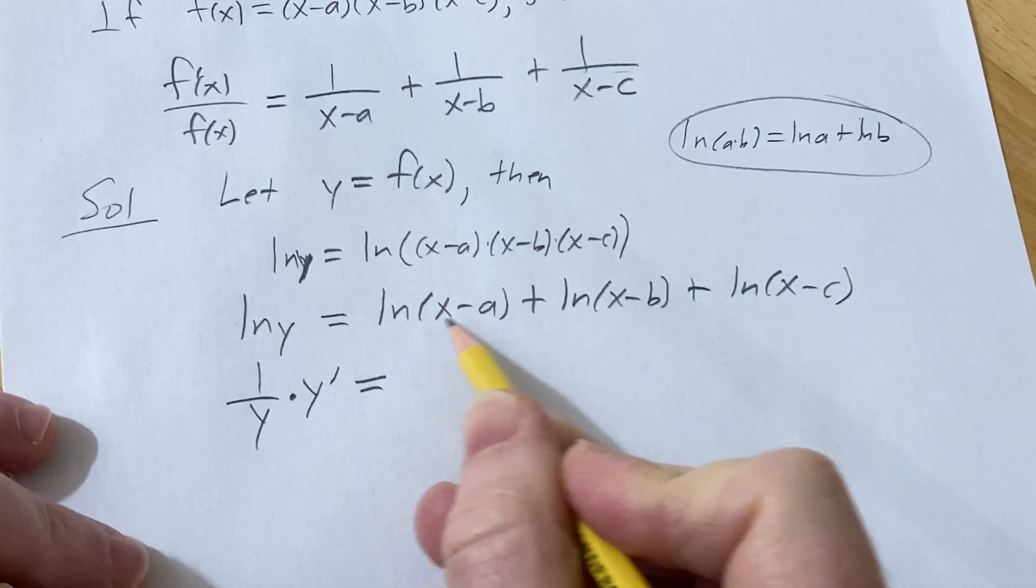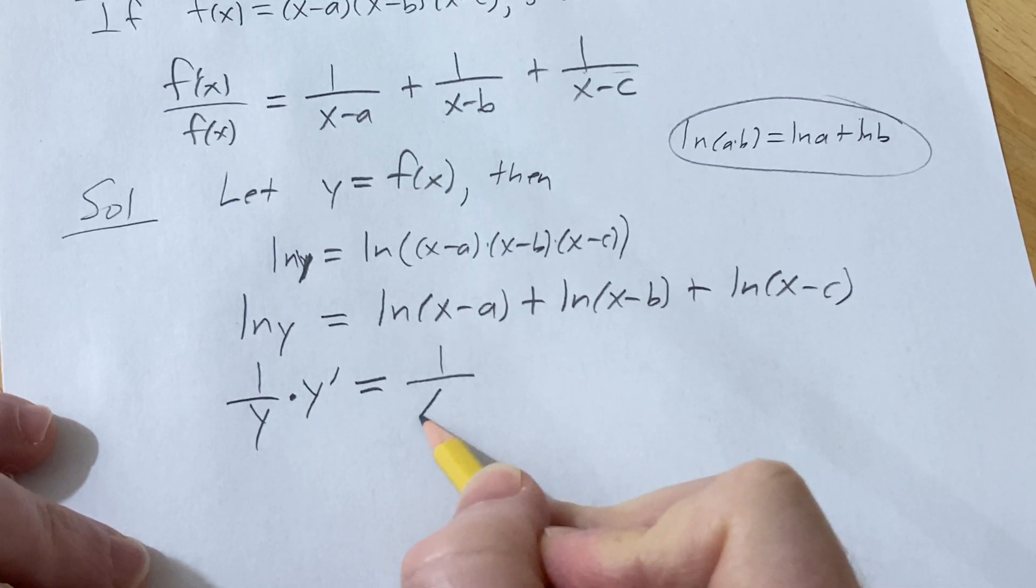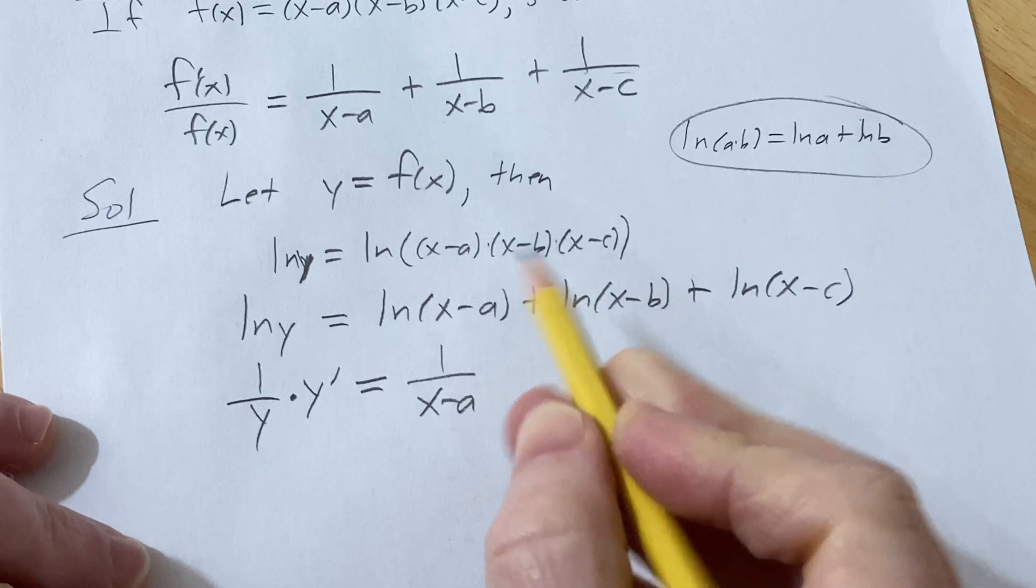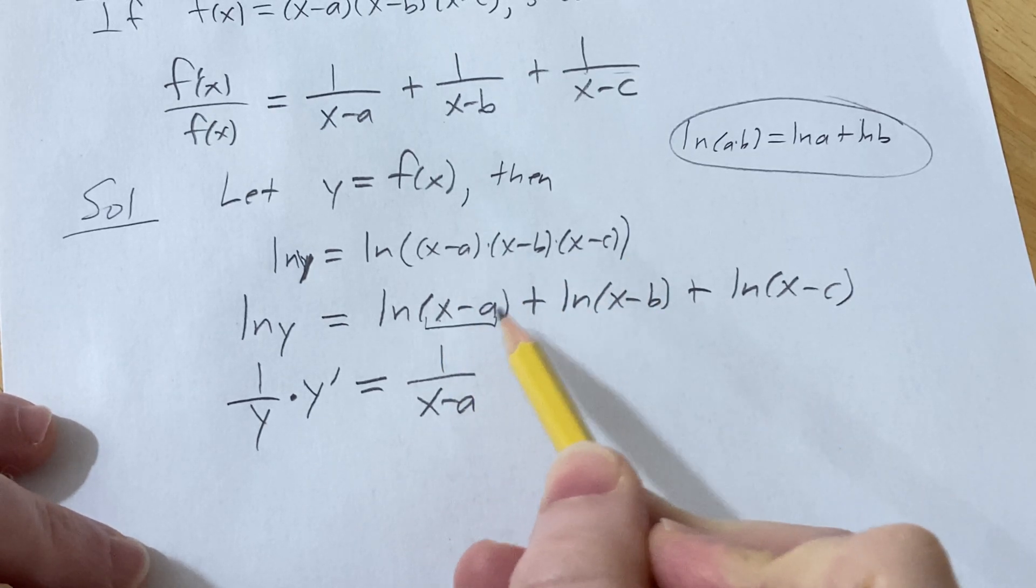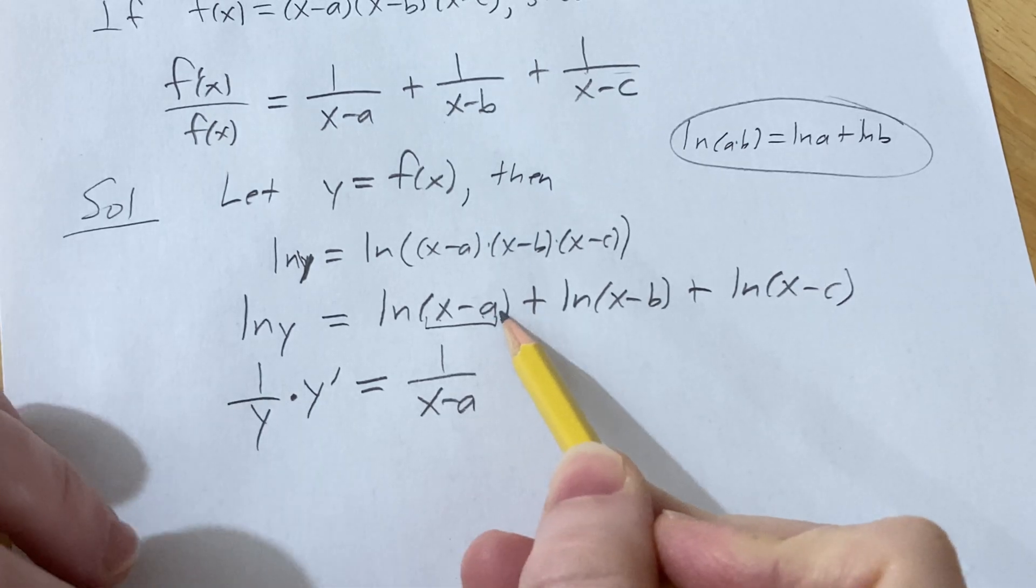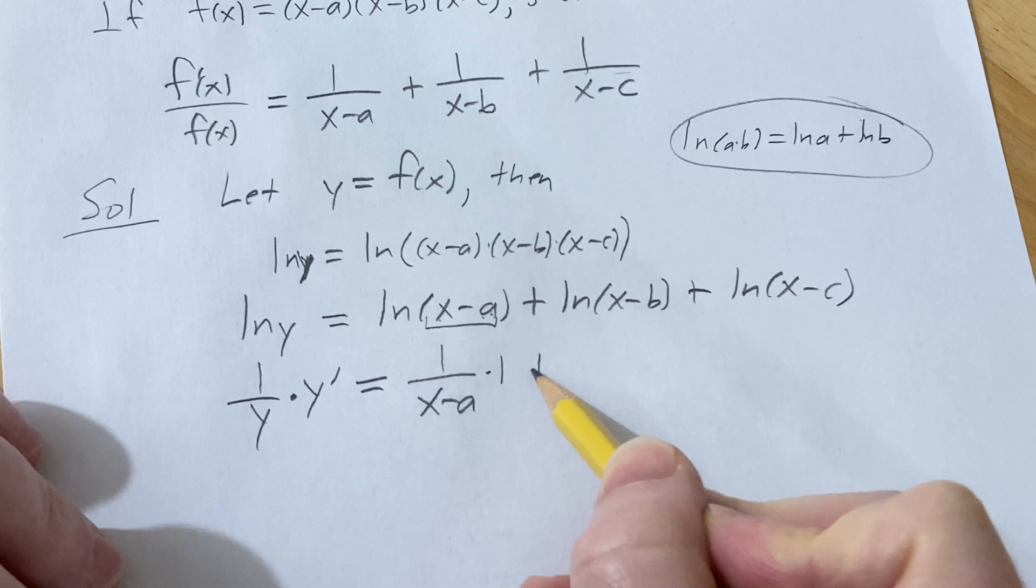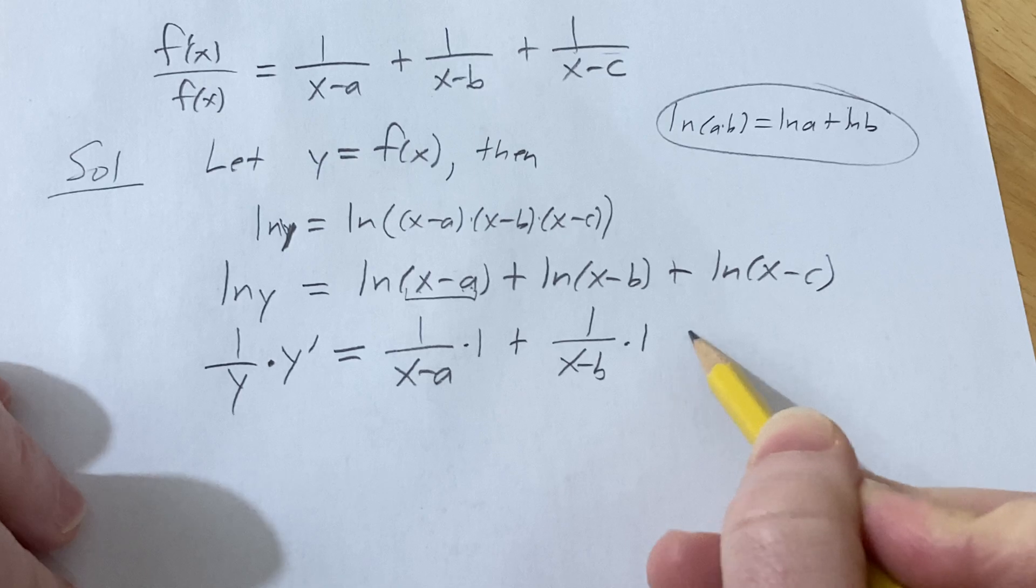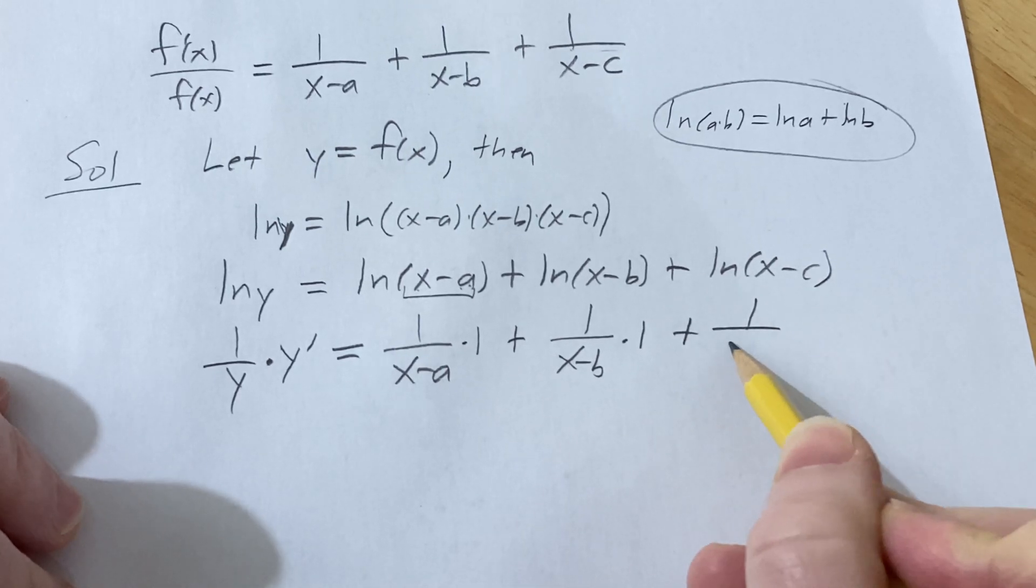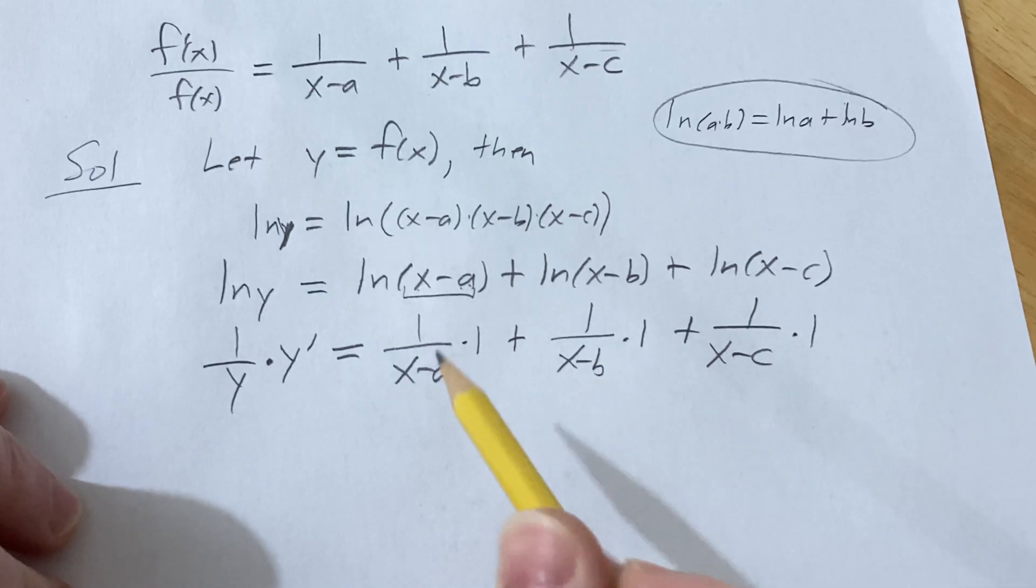And this is equal to, well, the derivative of ln is 1/x. So here it's 1/(x-a) times the derivative of the inside function. The inside function here is x-a. a is a constant, so the derivative is 0, and then the derivative of x is 1, so we get this. Plus, same thing here, it's 1/(x-b) times the derivative of the inside plus 1/(x-c) times the derivative of the inside. And we're basically done.